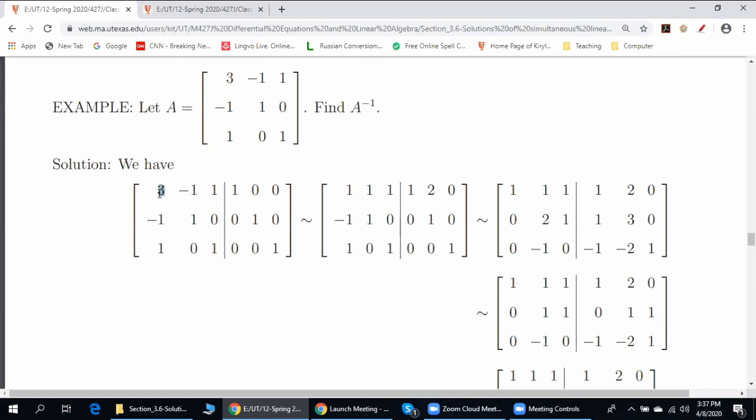So step one, obtain one instead of three. There are several ways of doing that. One way is to divide row number one by three. But in this case, we add row number two multiplied by two to row number one.